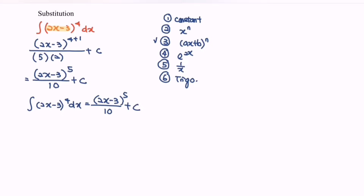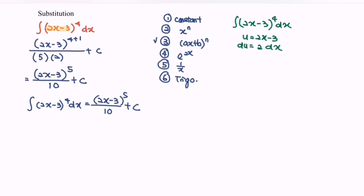Now if the same problem is given — integrate (2x minus 3) to the power of 4 with respect to x — we are going to use the substitution method. Let u equal to 2x minus 3. Differentiate with respect to x and we have du equals 2 dx. Referring to the question, we only have dx, so we modify the situation: dx equals du over 2. We then substitute so that (2x minus 3) becomes u to the power 4, and dx becomes du times one half.